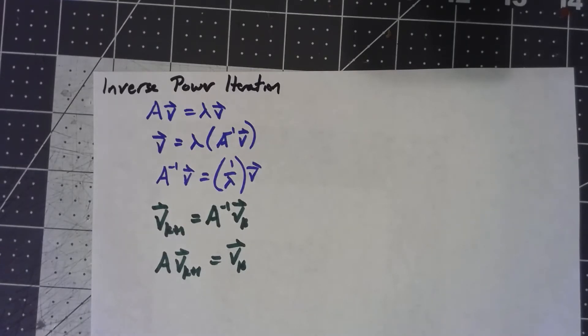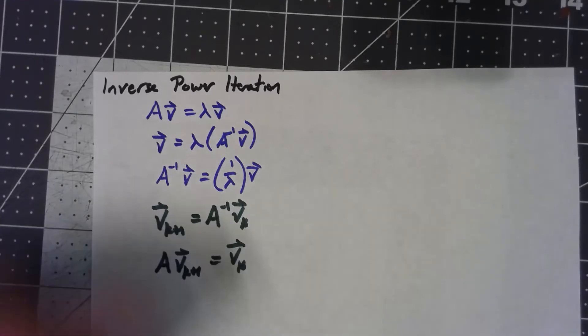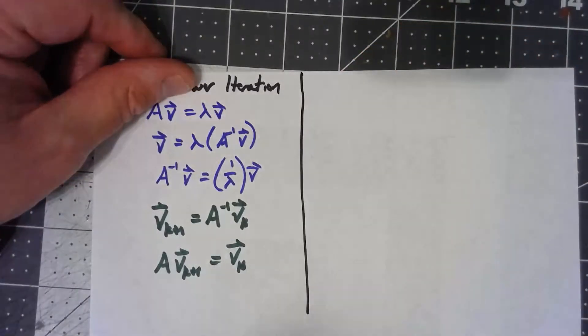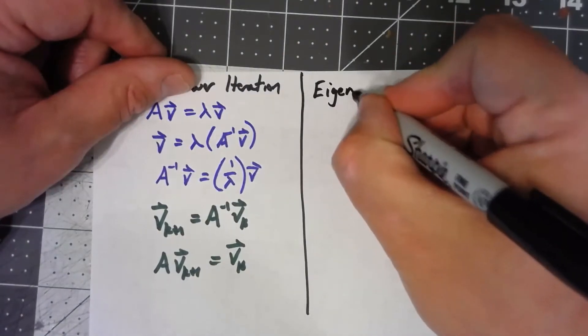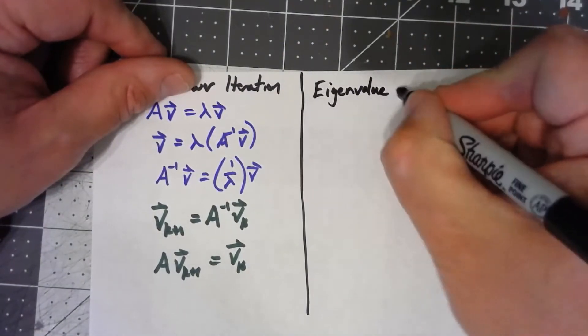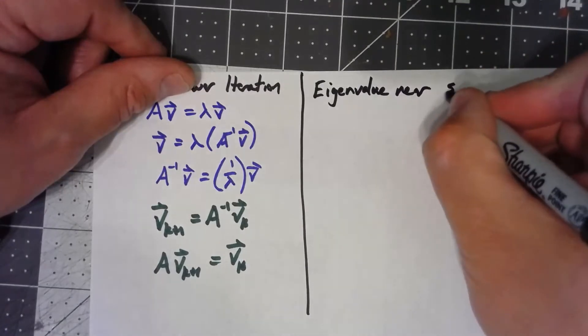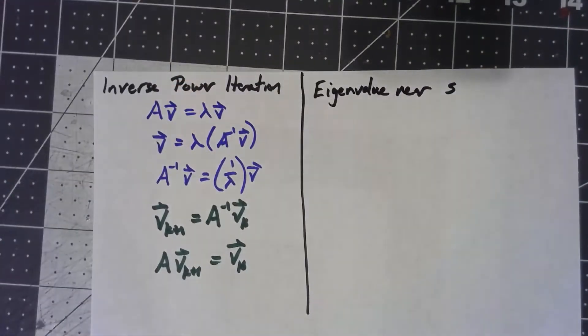We're going to do a trick called shifting. And the basic idea is, let's suppose we know there's some eigenvalue near a value s. Now it can't actually equal s. If it were equal to s, this process would fail. But if we knew that there was an eigenvalue near some value s,